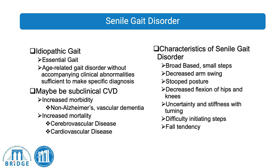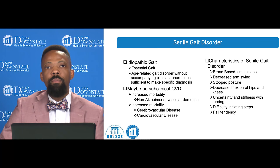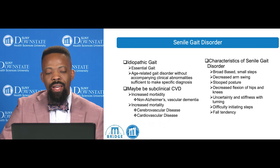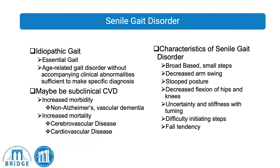Senile gait disorder is a term used to describe certain changes noticed in the older adult as they age. It is sometimes termed idiopathic gait or essential gait — an age-related gait disorder without any accompanying clinical abnormalities sufficient to make a specific diagnosis. Evidence supports that individuals with idiopathic or senile gait disorder are at higher risk of developing non-Alzheimer's or vascular dementia, and it may be evidence of subclinical cardiovascular disease, with increased risk of mortality from cerebrovascular or cardiovascular disease.